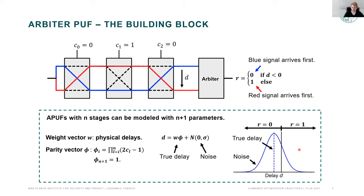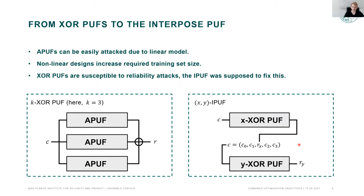This bit-flipping will become important when we talk about the reliability attack. Since the arbiter PUF can be described by a very simple linear model, it can be trivially broken by modeling attacks. So people composed PUFs from multiple arbiter PUFs. The most well-known is the XOR PUF, where you have multiple arbiter PUF instances and their responses are XORed together to get a single response bit. This non-linearity really helps — it increases your required training set size exponentially in the number of arbiter PUFs.